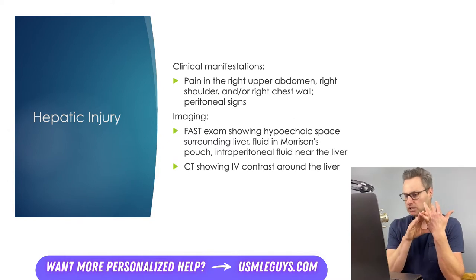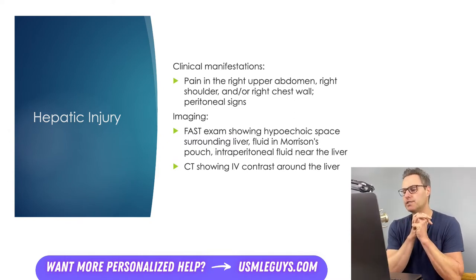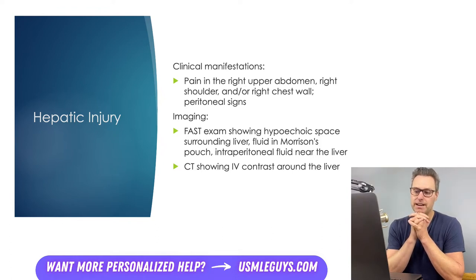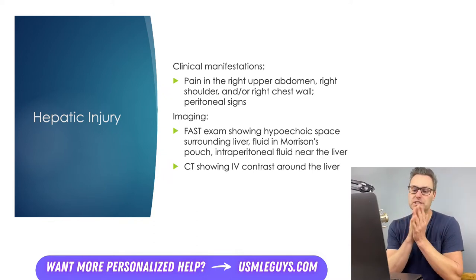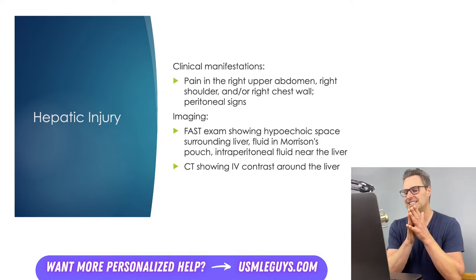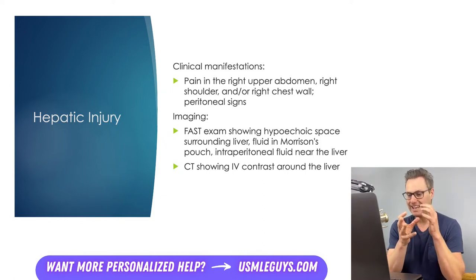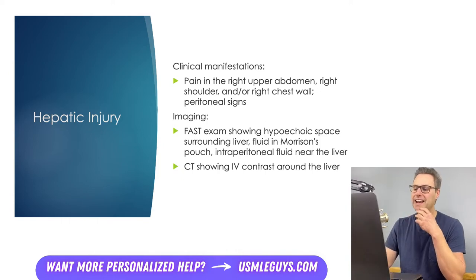A hypoechoic space surrounding the liver can be a sign of subcapsular fluid. Fluid can also be identified in the hepatorenal space, commonly referred to as Morrison's pouch, as well as free intraperitoneal fluid typically located in close proximity to the liver. If you do a CT scan and it shows IV contrast concentrating in or around the liver, that indicates an ongoing bleed.